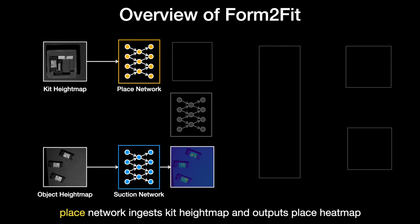Similarly, the kit height map is fed to a place module to produce pixel-wise predictions of placing success. The 3D locations of the pixels with higher confidence serve as better locations for the suction gripper to approach from a top-down angle to place the object.